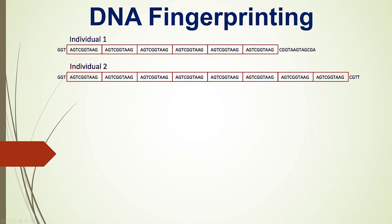As I explained in the last video, mini-satellite is a short tandem repeat that varies from person to person, and these variations in different people cause polymorphism. That means in a particular locus of the chromosome, if individual 1 has a sequence repeated 6 times, the same locus of individual 2 has the sequence repeated 8 times.